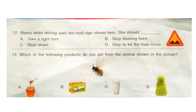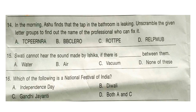Question 13: Which of the following products do you get from the animal shown in the picture? The correct answer is option A — honey. Question 14: In the morning, Ashu finds the tap in the bathroom is leaking. Unscramble the given letter groups to find out the name of the professional who can fix it. The correct answer is option D — plumber.